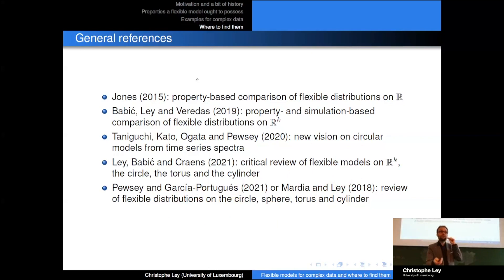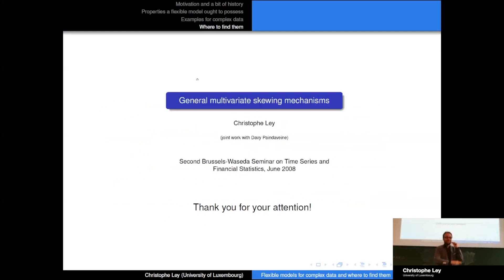And I will also end up - I had a little bit of similar thoughts as Tomoyuki - I'm also referring to this Brussels-Waseda workshop in 2008. So this is a screenshot of my talk that I made at that moment. That was actually my very first presentation that I made as a PhD student. As you could see from the pictures, I was much younger by then. I was talking about general multivariate skewing mechanisms. For me, it's really a particular pleasure to have you here now, because it is really there that, in a sense, my scientific career in terms of talks at least started. So thank you for that, and thank you very much for your attention.